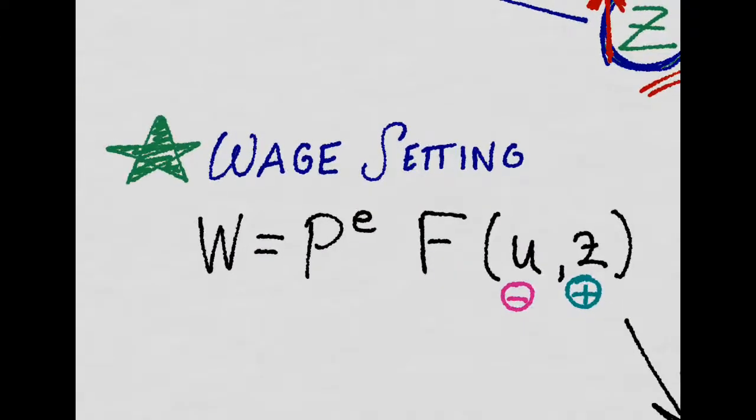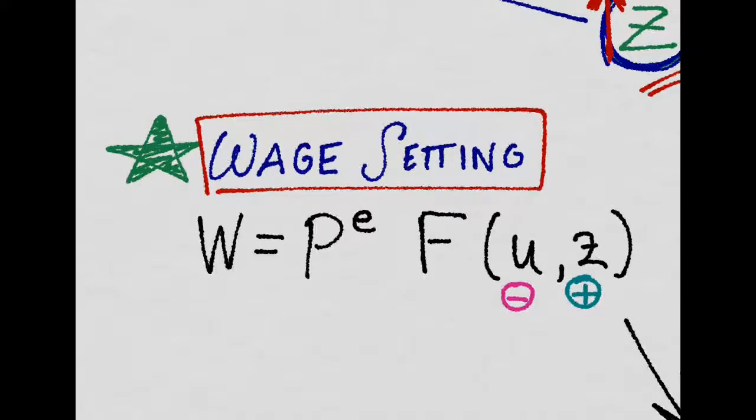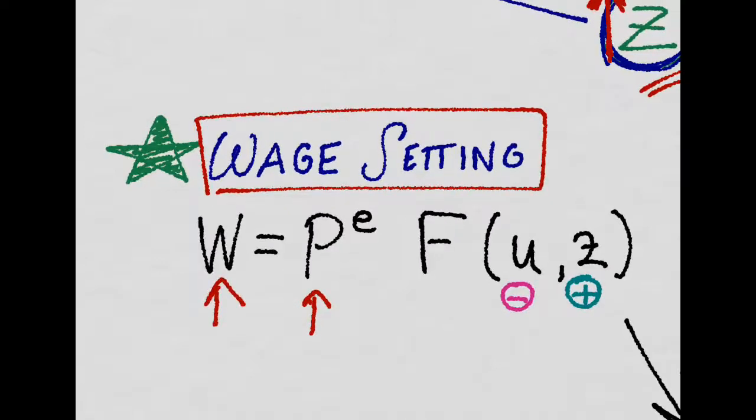So now we know how to get to the basic wage-setting equation. Now, remember that if workers expect the price level to go up, they will bid their wages up in order not to lose any purchasing power.